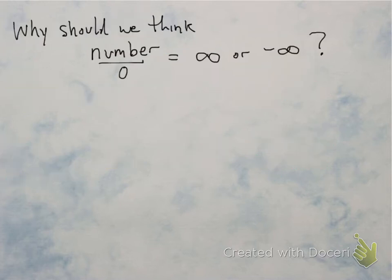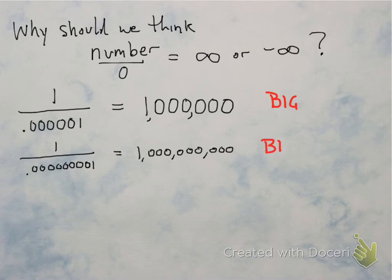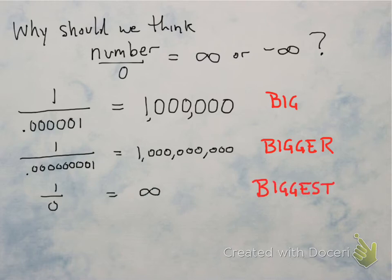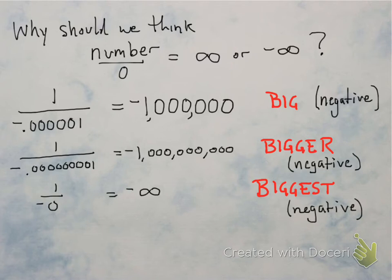Let's think about why a number divided by 0 is infinity or negative infinity. Take 1 divided by 0.00001 — you get a million, a big number. That 0.00001 was really close to 0. Pick a number even closer to 0, and 1 divided by that gives an even bigger number. So if you take 1 divided by 0, you get the biggest number, which is infinity. The same thing happens if you divide by a small negative number — 1 divided by negative 0.00001 gives negative a million, so 1 divided by 0 could also be negative infinity.